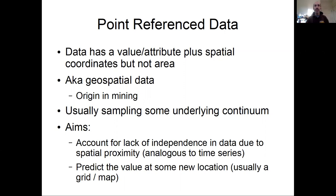The idea is that you're usually envisioning a case where there's some underlying continuous attribute and you're trying to sample from it. There are often two aims to point reference data analysis. The first is that you're interested in the data itself — you have some X's or X's and Y's — and you want to understand the data and the relationships among it, but you need to account for the lack of independence due to spatial proximity.